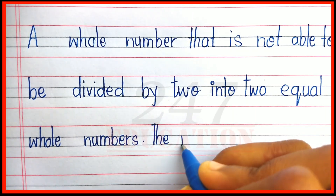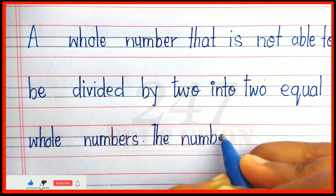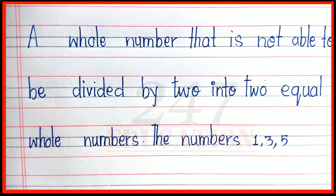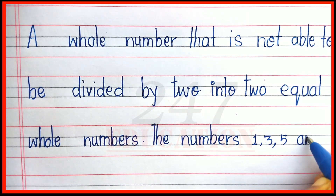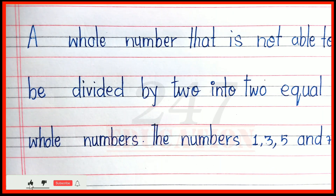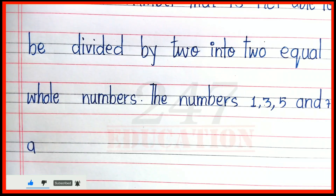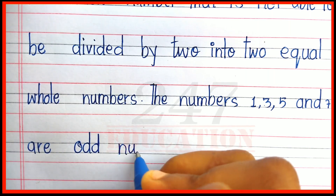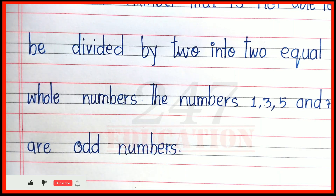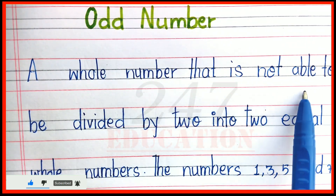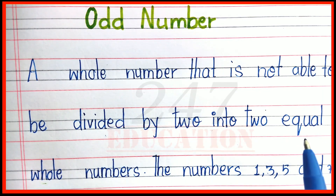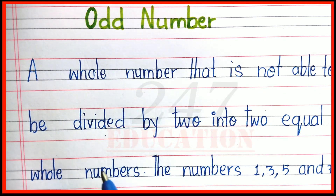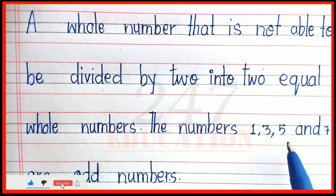The numbers one, three, five, and seven are odd numbers.